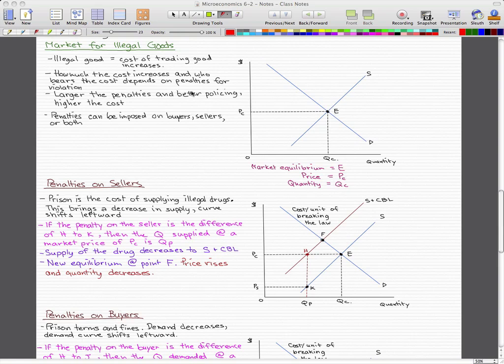Now we're going to continue from our last video on the market for illegal goods. We talked briefly about this graph, and I forgot to mention that E is the market equilibrium, PC is the price, and QC is the quantity as I have here.